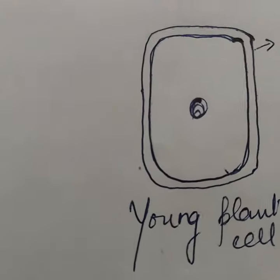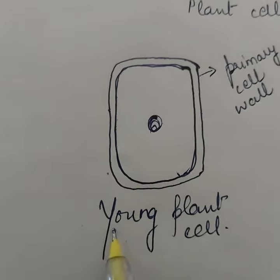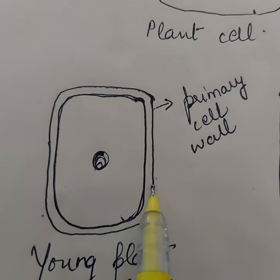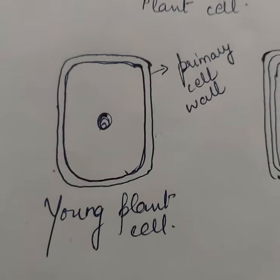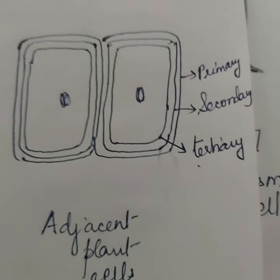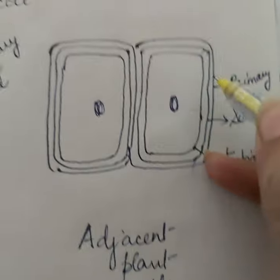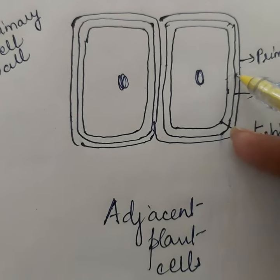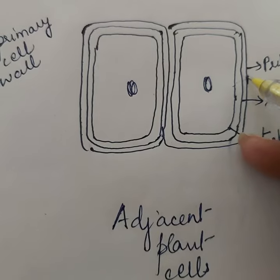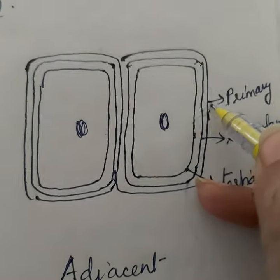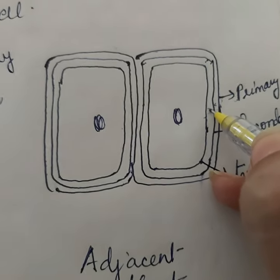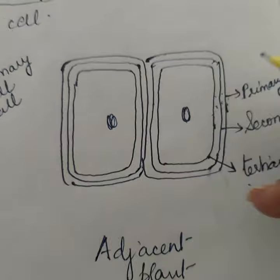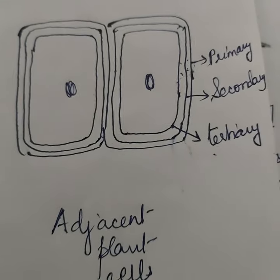Now when a plant cell is young, when it is in the growing phase, there is only a single cell wall covering the cell membrane. This cell wall is called a primary cell wall which is generally present in young plant cells. But as the plant grows mature and becomes older, there is accumulation or deposition of a secondary as well as a tertiary cell wall beneath the original primary cell wall.